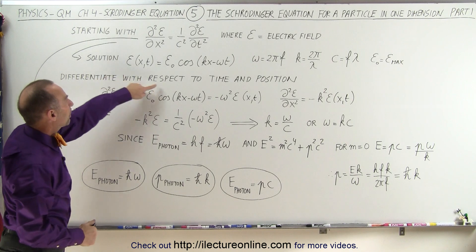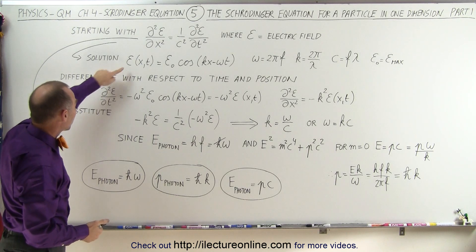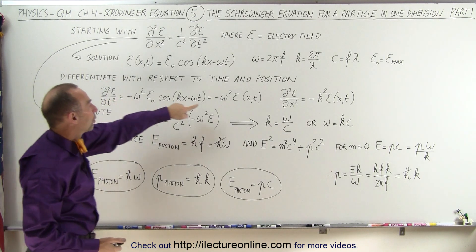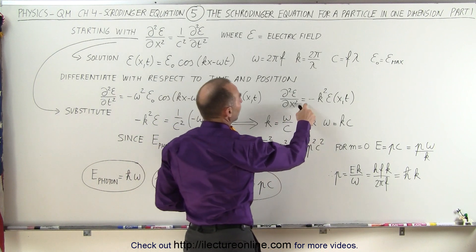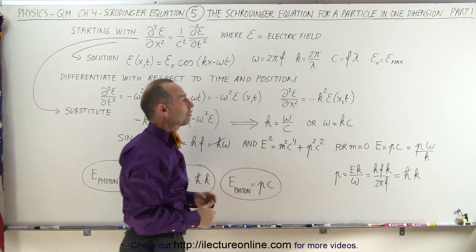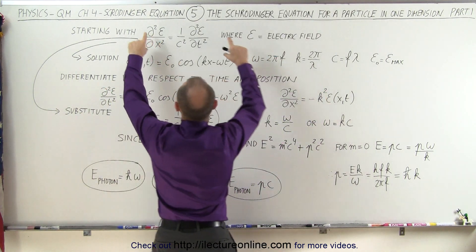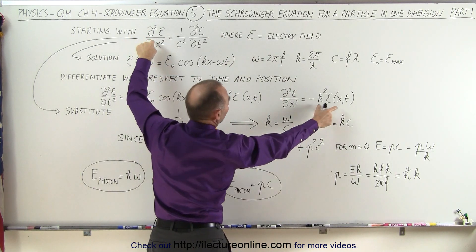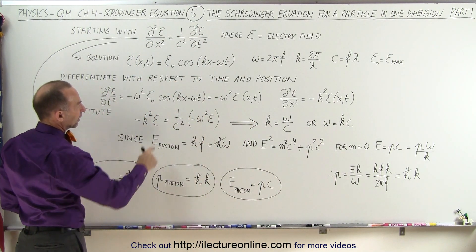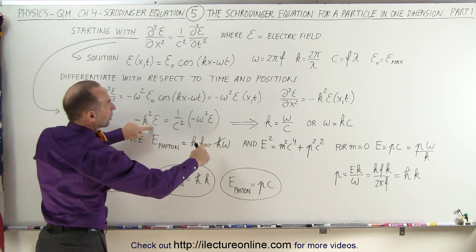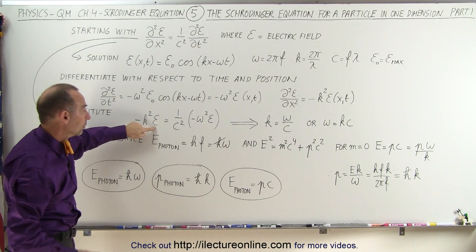We're going to differentiate this equation with respect to time and position — twice each. The second derivative with respect to time gives us minus ω² times the original electric field equation. The second derivative with respect to position gives us minus k² times the original equation. Substituting these back into the wave equation and dividing both sides by the electric field, we end up simply with k² equals ω²/c², or taking the square root, k equals ω over c.